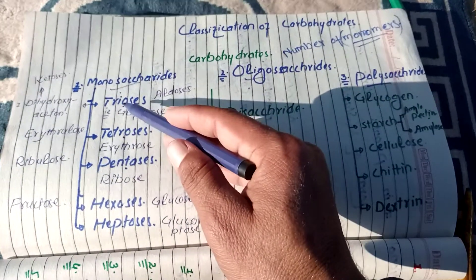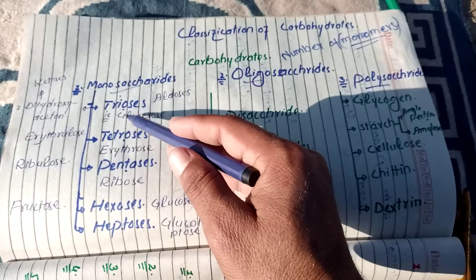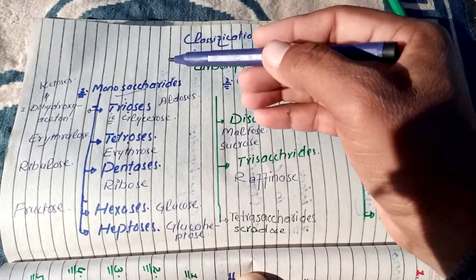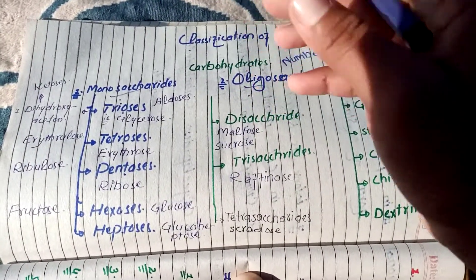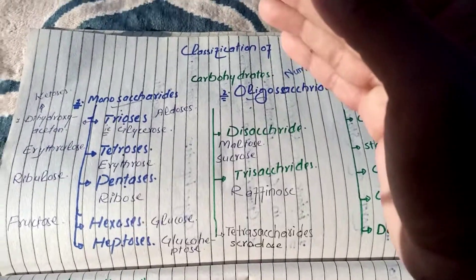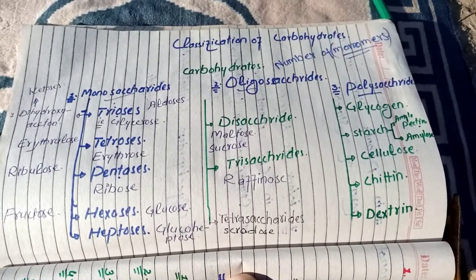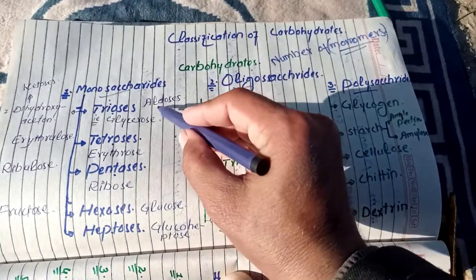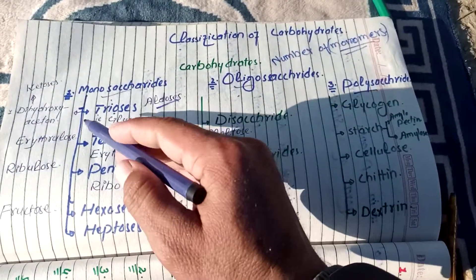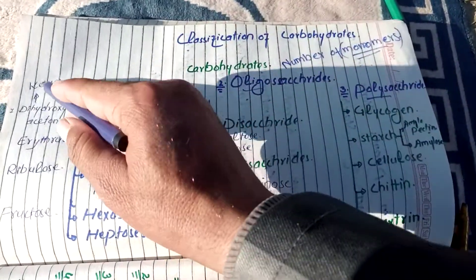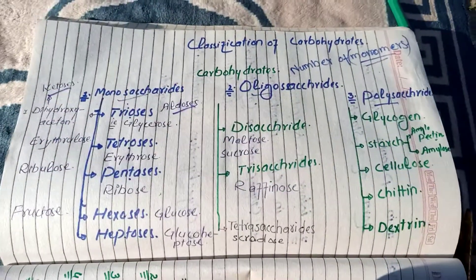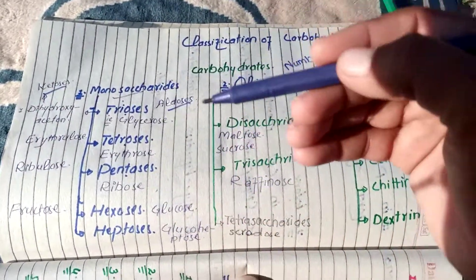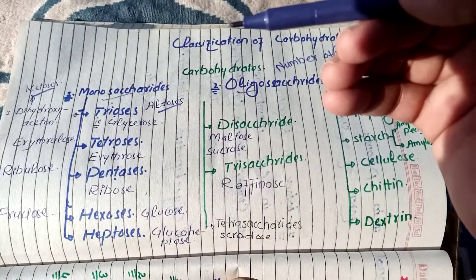Further monosaccharide ki division hai on the basis of functional group. Jis mein aldehyde functional group hai, us ko kehte hain aldoses. Aur jis mein ketone functional group hai, us ko kehte hain ketoses. Halanke is ko baad mein hum detail ke saath discuss karenge inshallah.